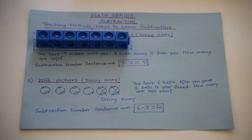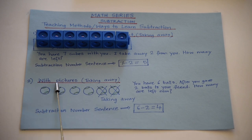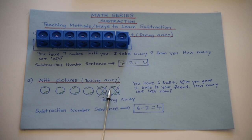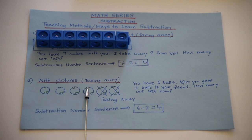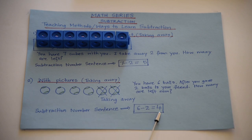Suppose you have to do a subtraction problem in your notebook — we can do that with the help of pictures. You have six balls and you gave two balls to your friend. How many balls do you have? Four. The subtraction number sentence is six minus two equals four.